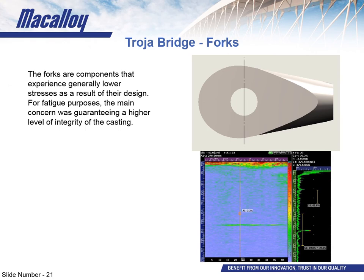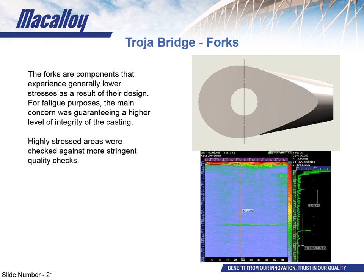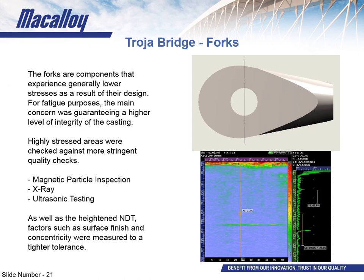The first part of the system considered was the fork. The fork generally experiences low levels of localized stress because of its geometry — it has a lot of cross-sectional area to spread the load across, so the design of the fork itself didn't need to change. Instead, it was imperative to ensure the material throughout the fork was homogeneous and the casting integrity was to a very high level. The most highly stressed areas were checked with NDT comprising magnetic particle inspection, x-ray, and ultrasonic testing. The surface finish was also ensured to be sufficiently smooth so as not to encourage crack initiation, and all connection points such as the pinhole and thread were confirmed to be concentric.